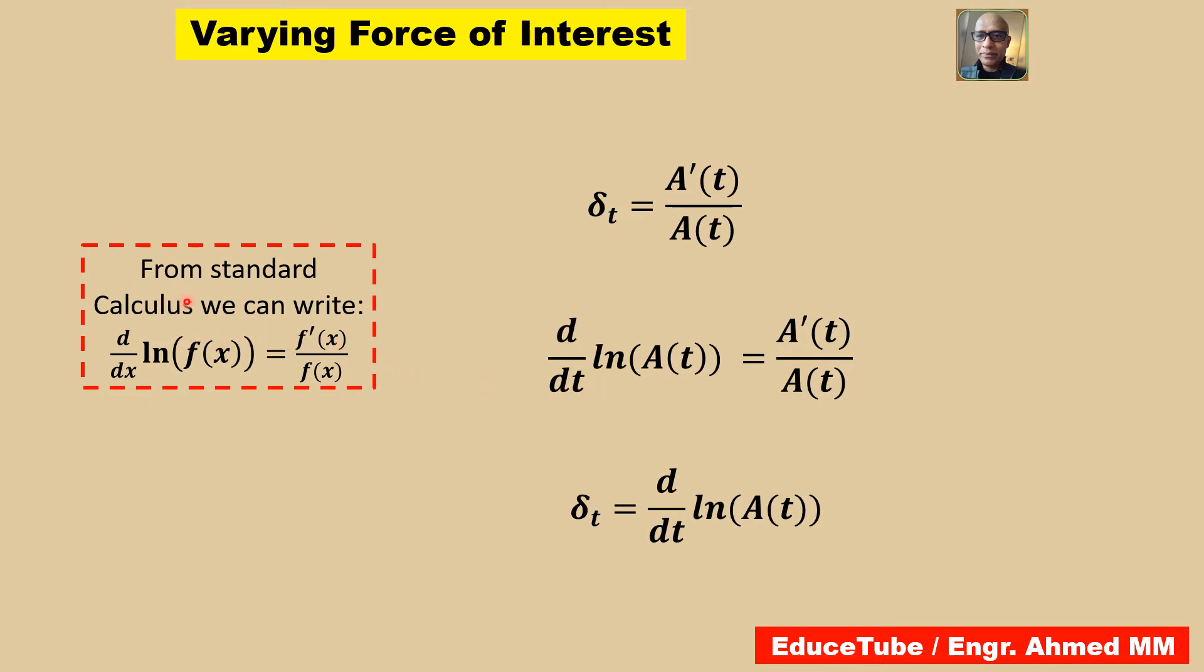How it comes from this? If you go to calculus book, then you will see this ln(f(x)), if we do differentiations, I mean first derivative, then the result will be f'(x)/f(x). Same way we wrote here, if we do differentiations of ln(A(t)), I mean first derivative of this function, then the result will be A'(t)/A(t). As we know, this is δ_t. So surely we can write δ_t equal to this, because these and these are the same.